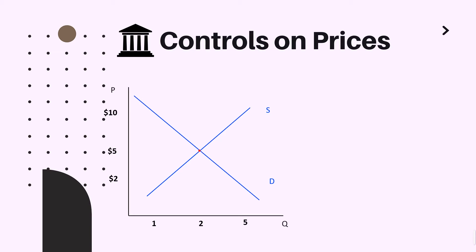Let's say we have a market in equilibrium and the government imposes a price floor. It is important to mention that there are two types of price floors and price ceilings: binding and non-binding. Binding regulations are those which affect the market. As you can see, our red line representing the price floor is binding because it is above the equilibrium price. If it was below the equilibrium price, it would not be binding and nothing would change. The same refers to the price ceiling: if it is higher than the equilibrium price, it's not binding, but if it is lower, then it is binding.